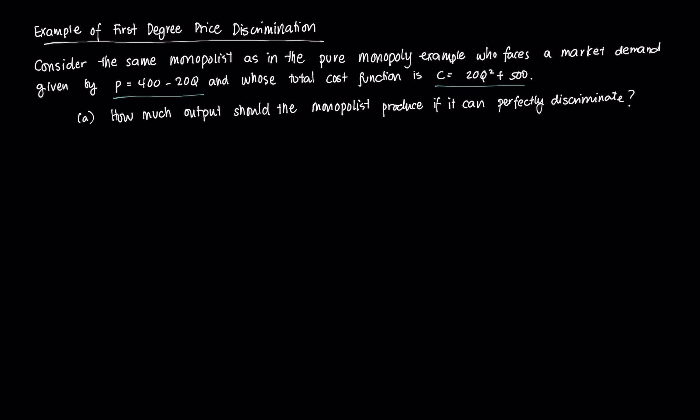If it can perfectly discriminate, it means that it knows exactly the maximum willingness to pay of each consumer and it can reap that consumer surplus of each consumer that's out there. So if the firm can do first-degree price discrimination, then the optimal output satisfies a specific condition.